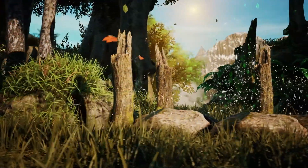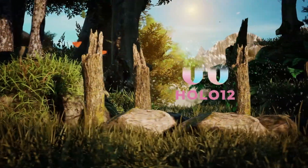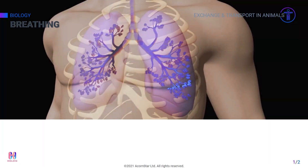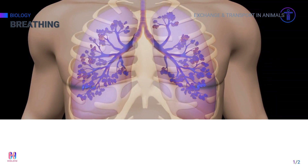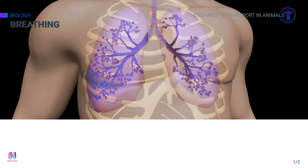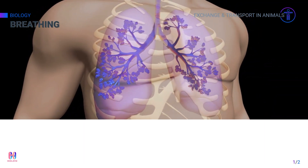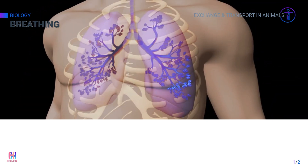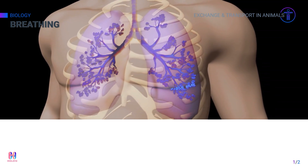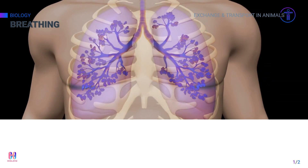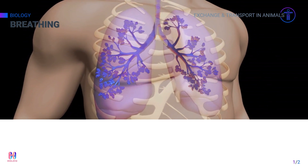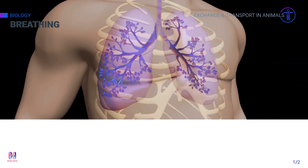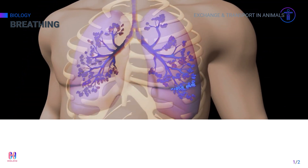Breathing consists of two parts: the first is the inspiration of air, or inhalation; the second is the expiration of air, or exhalation. The processes of inspiration and expiration are possible because of the intercostal muscles and the diaphragm.